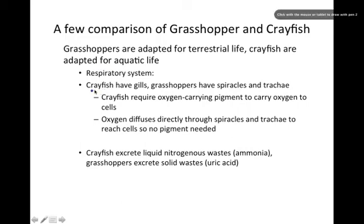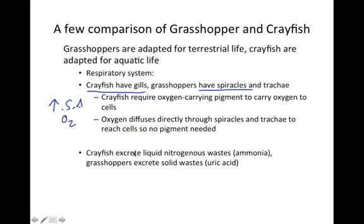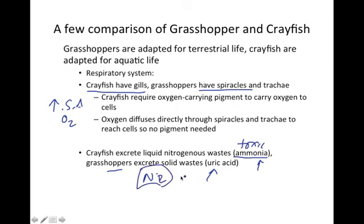Comparing crayfish and grasshoppers: crayfish have gills and grasshoppers have spiracles — both have a high surface area to absorb oxygen into tissues. For waste removal, crayfish are aquatic and can excrete the more toxic waste ammonia, whereas grasshoppers must excrete uric acid, which is less toxic but requires more energy to produce. This nitrogenous waste — containing the element nitrogen — results from protein digestion or protein breakdown.